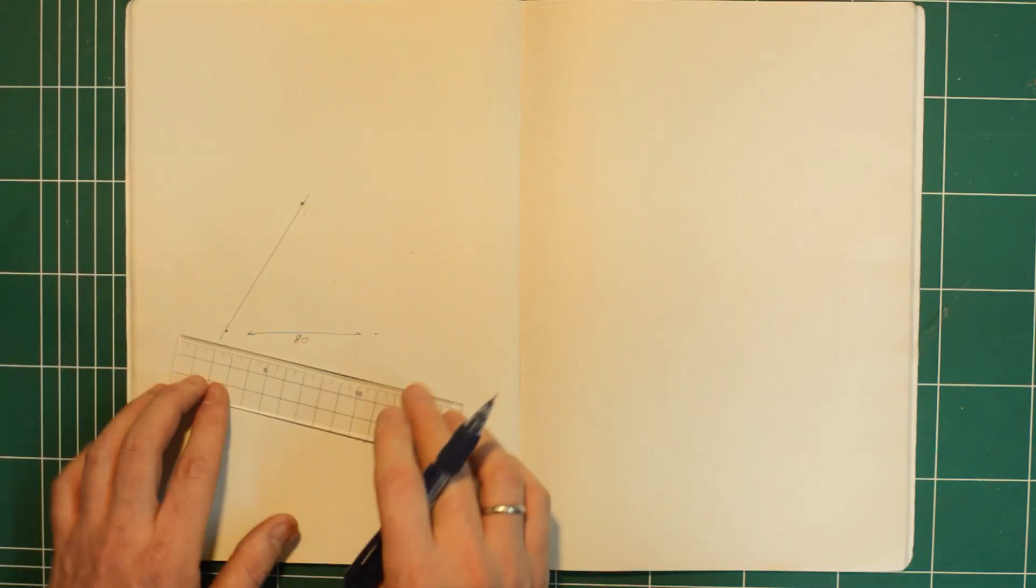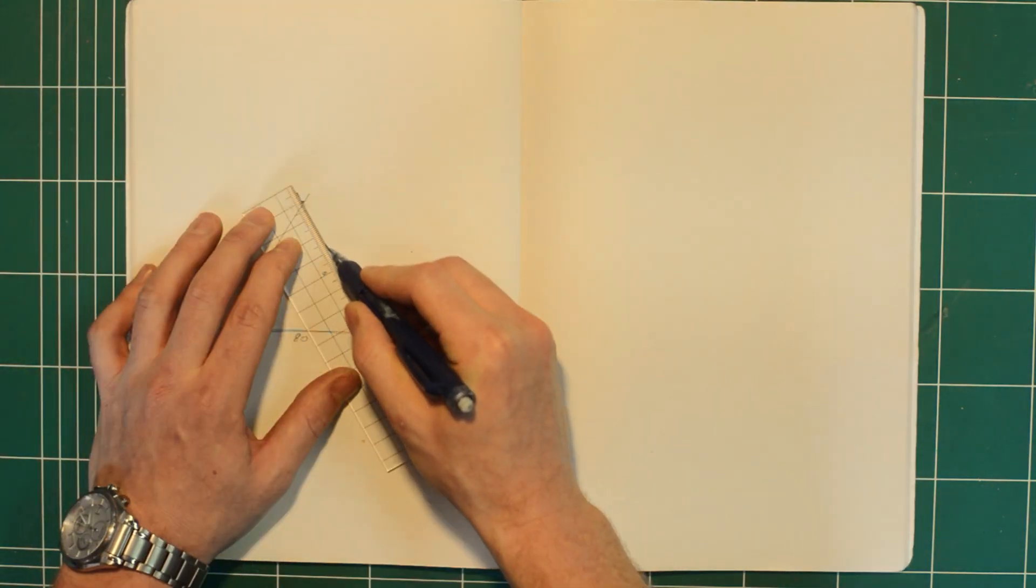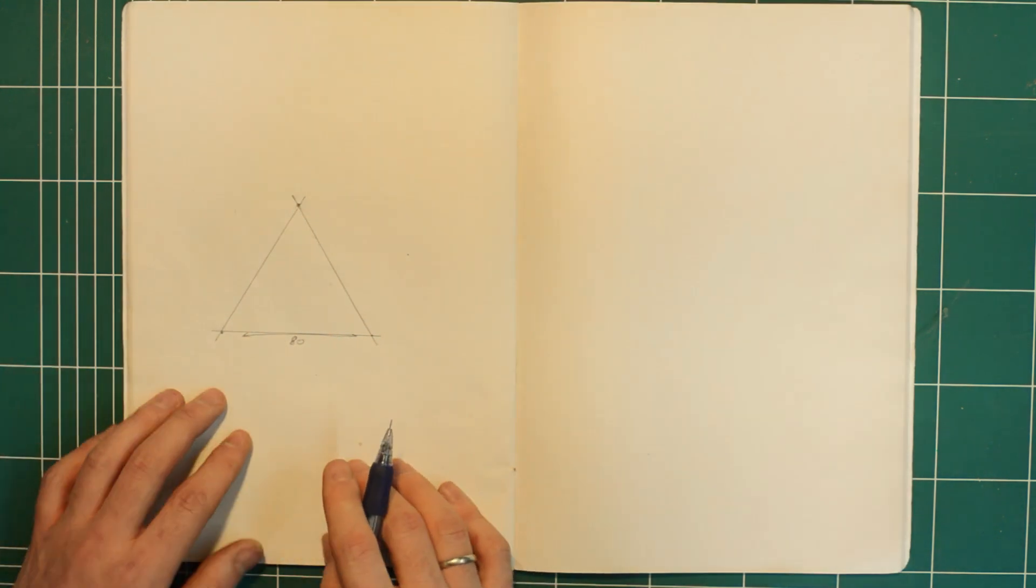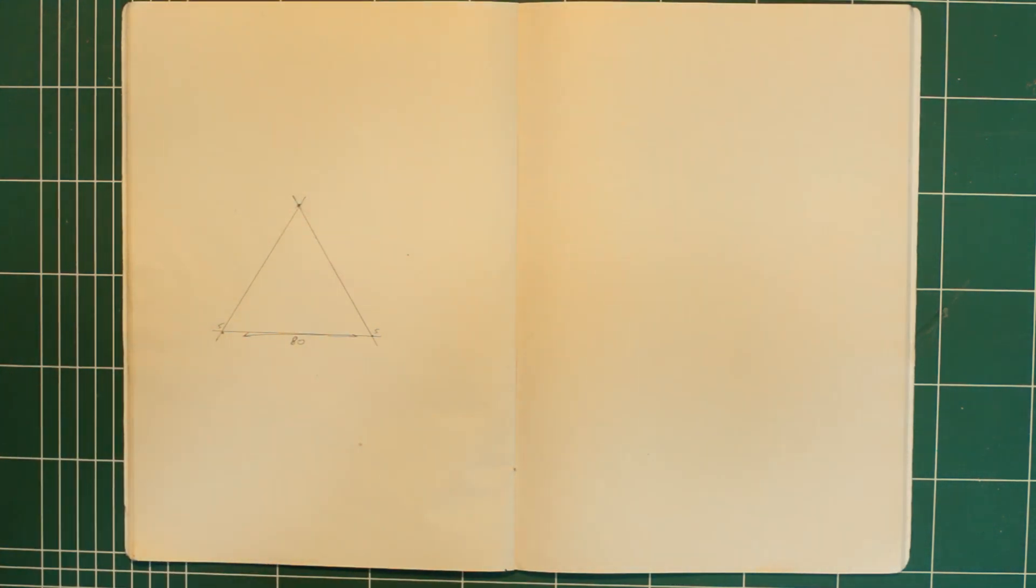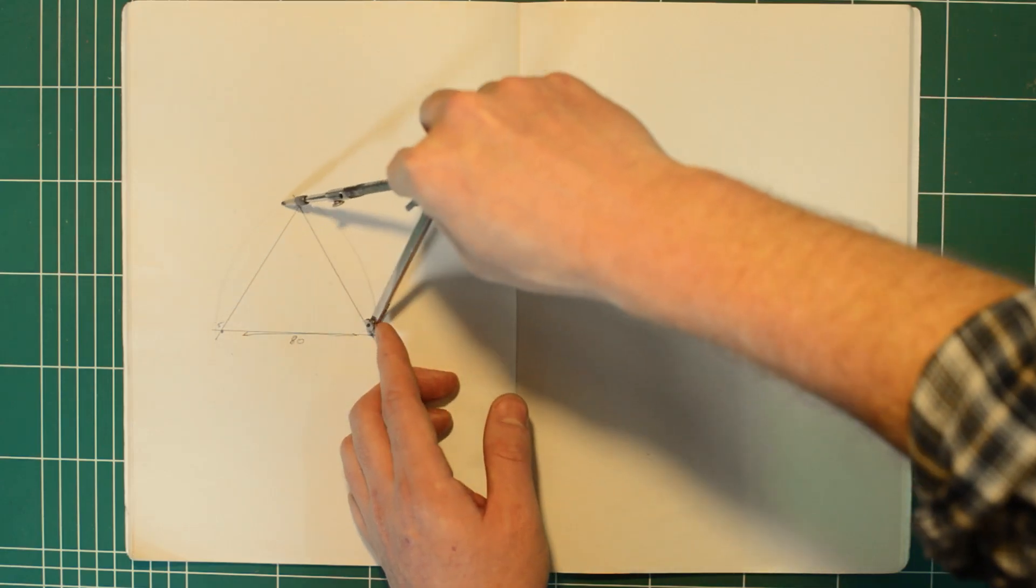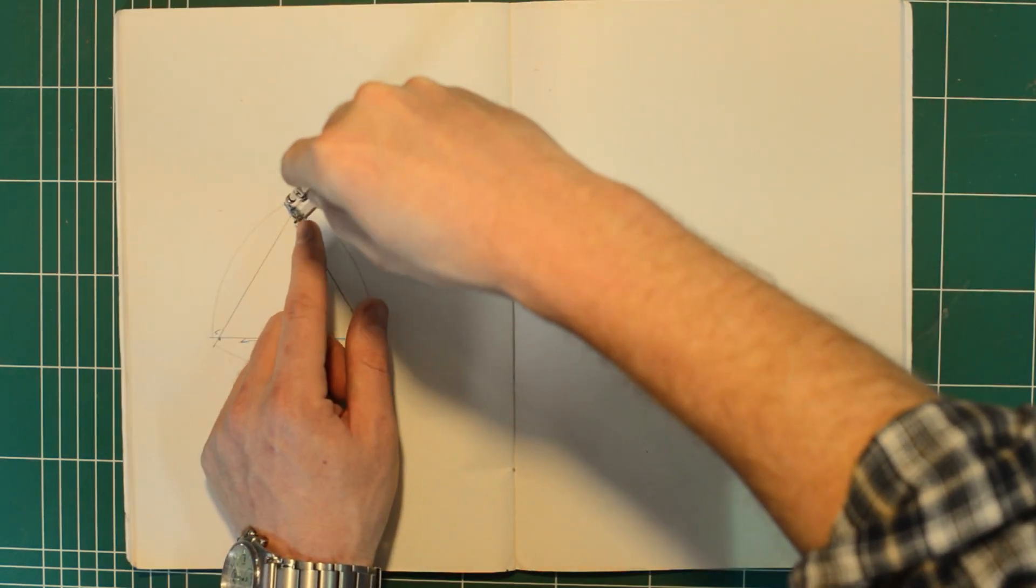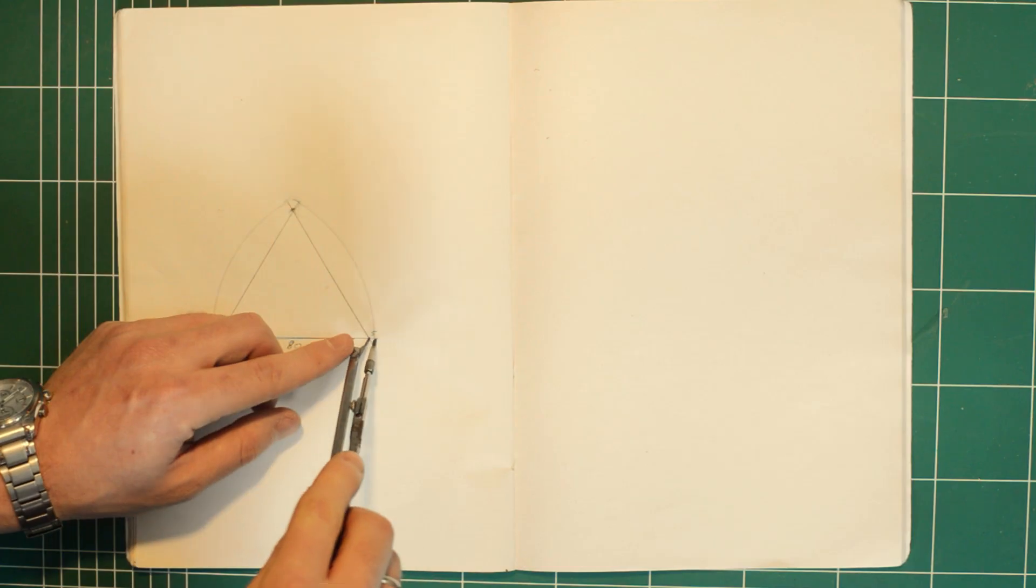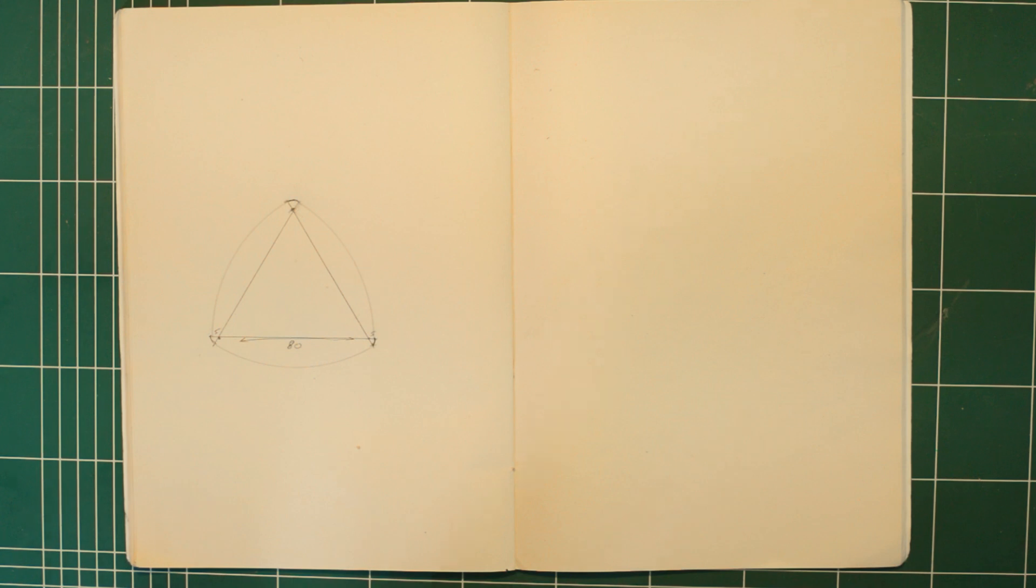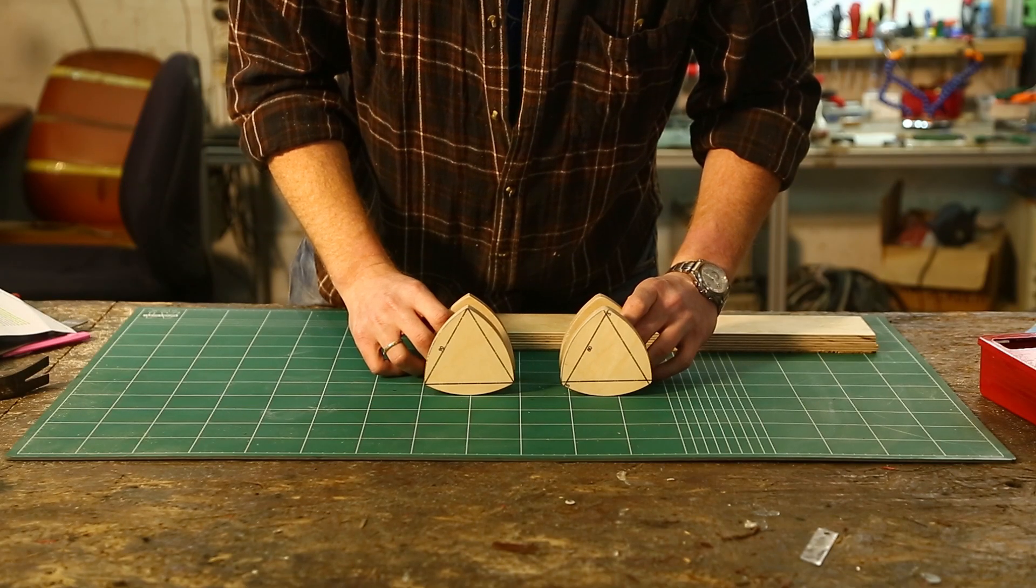Fortunately, we can easily solve this by constructing a rounded version of the Reuleaux triangle. We'll again start with an equilateral triangle, only this time we'll extend the sides just a little bit. Now, if we draw an arc between two adjacent lines, so that the center of the arc coincides with the crossing point of the two lines we're connecting, we still get a shape of constant width, this time with no sharp edges.